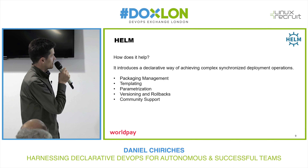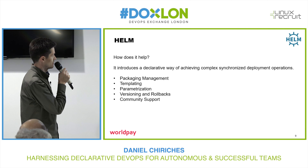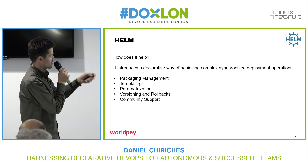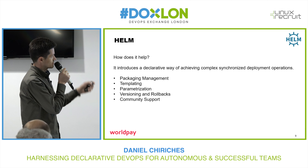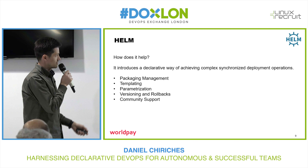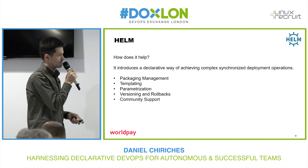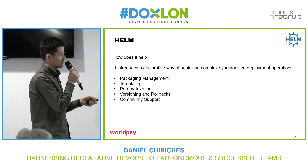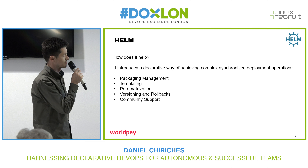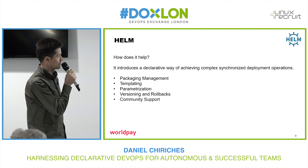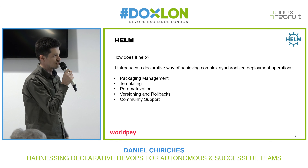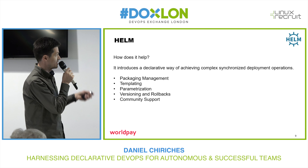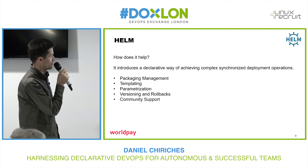For a summary: you have the templating part, the parameterization part, versioning and rollbacks. And there's the community support — when we looked at that DevOps tool stack at the beginning, almost all of that stuff can be deployed using a Helm chart. When you check a repository for a tool on GitHub, you'll see the Helm chart folder as well. It's kind of becoming a standard way of deploying things.